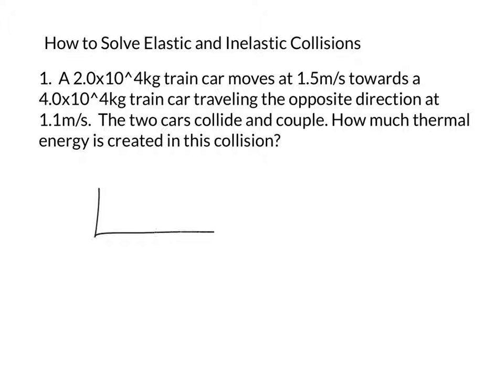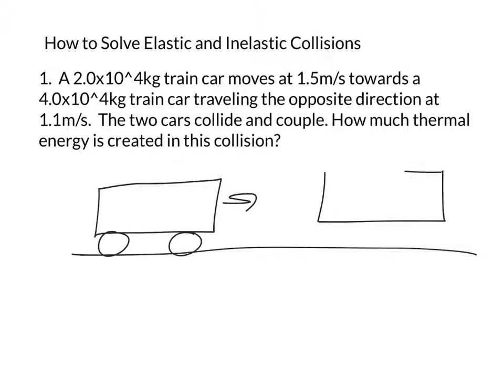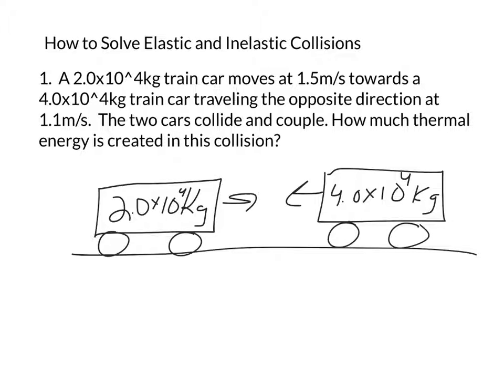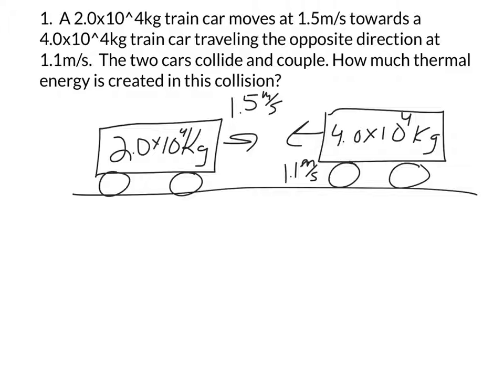I'm going to draw this, helps me visualize things. We've got a train car going this way on the track, and we've got a train car going this way on the track. This one's 2×10^4 kilos, this is twice as much. Speeds are pretty close, this one's going at 1.5, this one's going at 1.1.